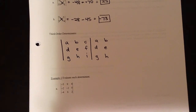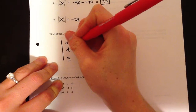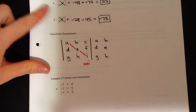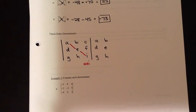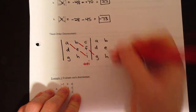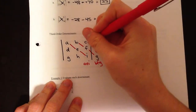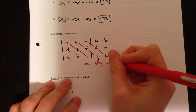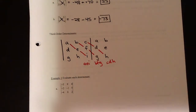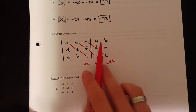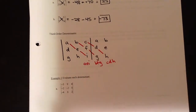Then you draw diagonals starting with the upper left element A, multiplying down each diagonal. Going down, we get A times E times I, then B times F times G, then C times D times H. Notice every value gets covered — D, G, and H are hit as well, which is why we copied those values outside. So we have three different products from multiplying down the diagonals.